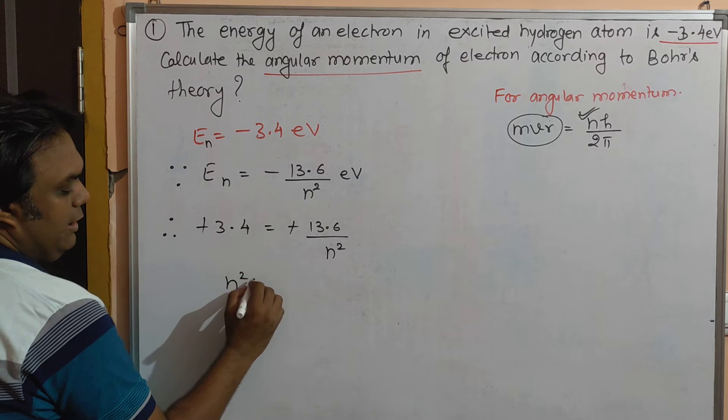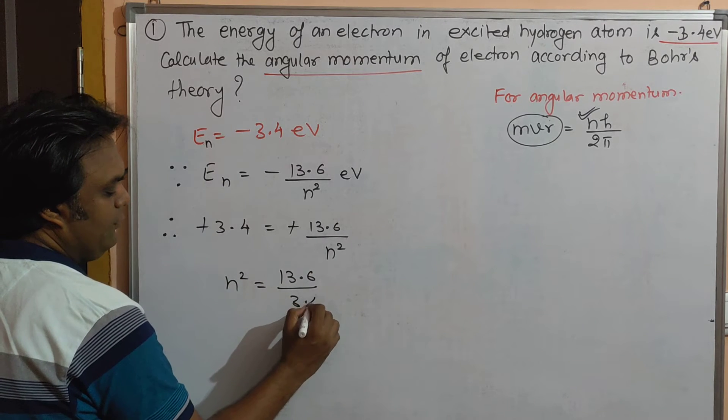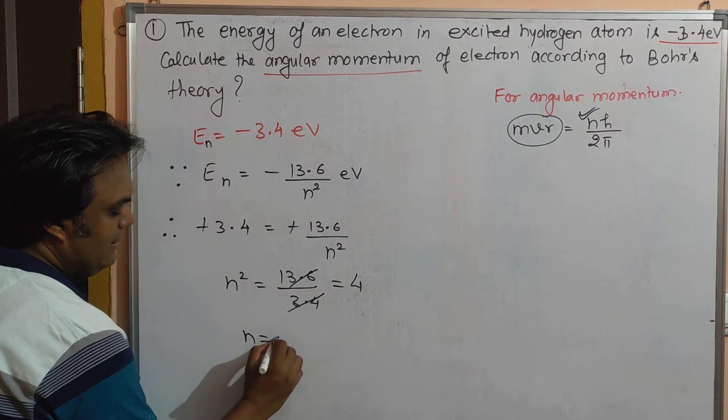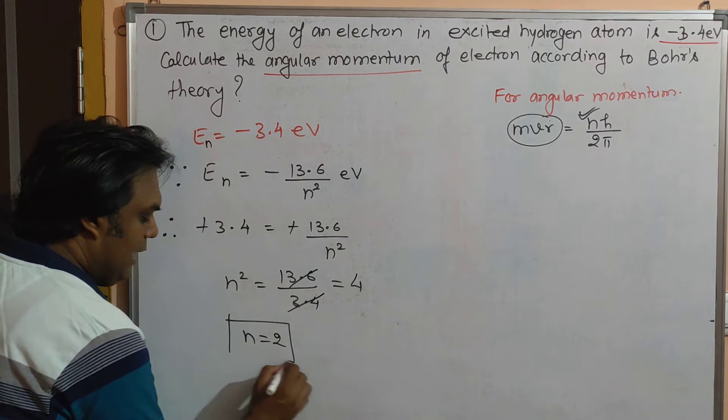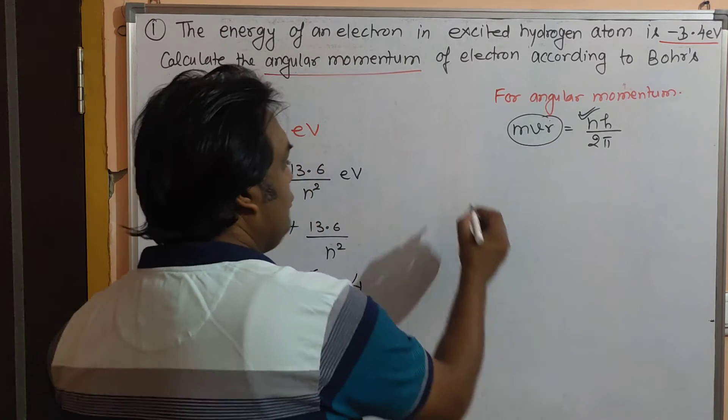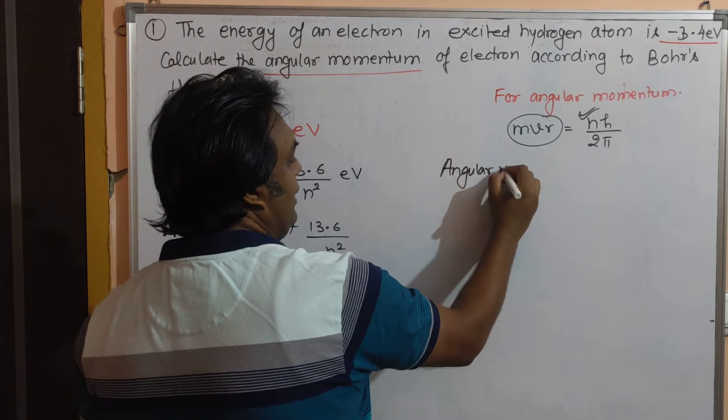n² equals 13.6 upon 3.4, which will cancel out to 4. So n equals 2. Now after getting this value of n, we can put this value here.